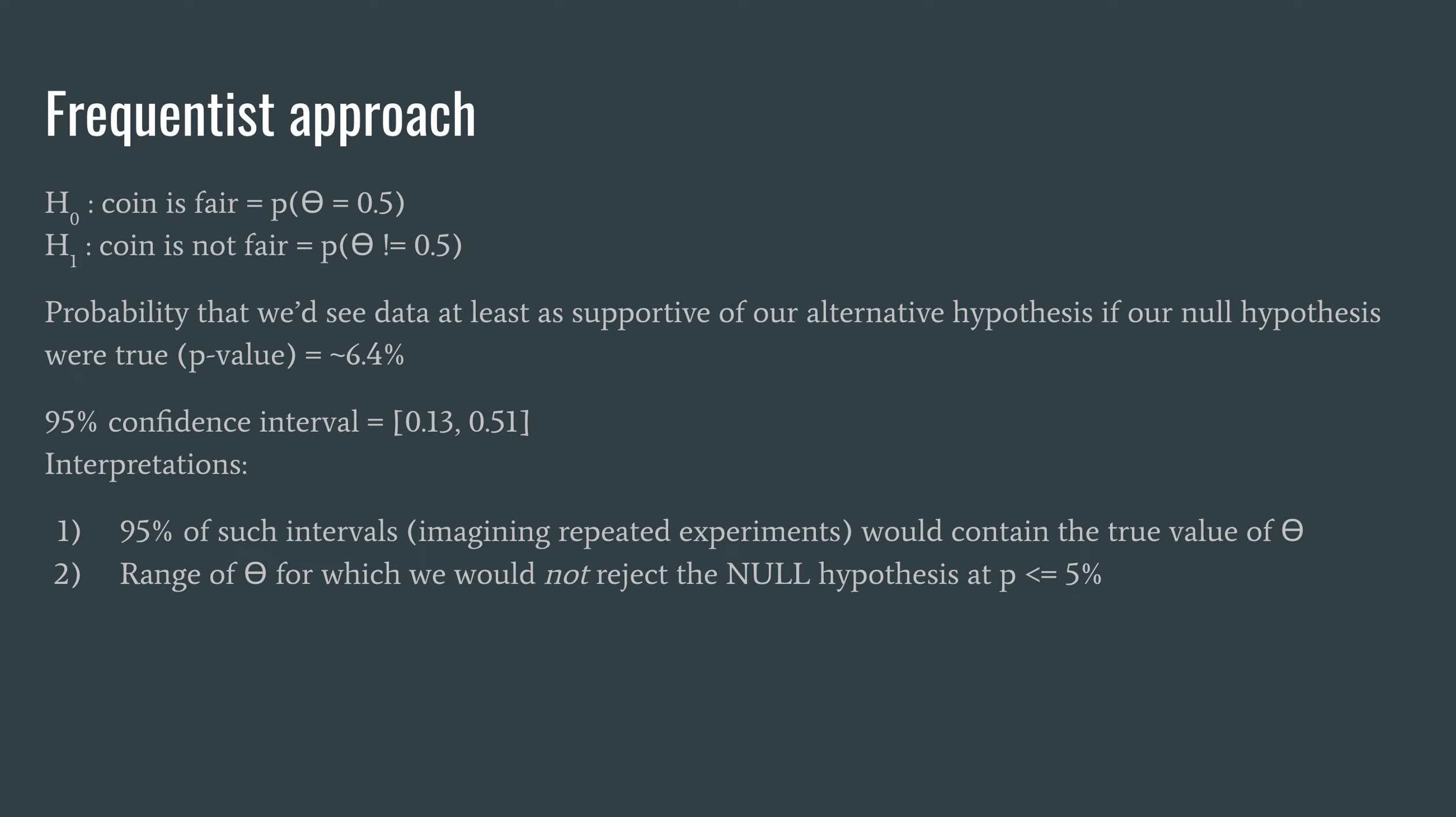So that's imagining repeated experiments where we're calculating a confidence interval for each one. An alternative interpretation is that the confidence interval is the range of theta for which we would not reject the null hypothesis at p is less than 0.5.